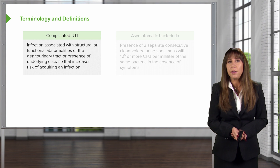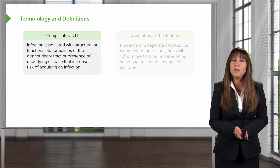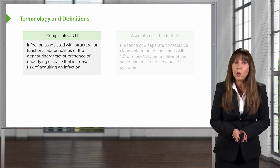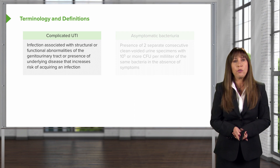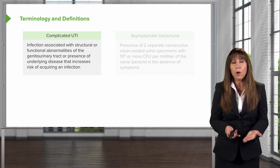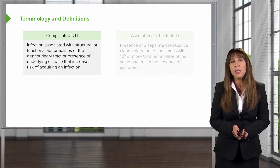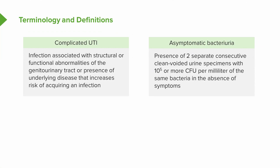A complicated UTI, on the other hand, is when infection is associated with a structural or functional abnormality in the genitourinary tract, or the presence of an underlying disease that increases risk of acquiring an infection. You'll also hear the term asymptomatic bacteriuria — that means the presence of two separate consecutive clean-voided urine specimens with 10 to the fifth or more colony-forming units per milliliter of the same bacteria, in the absence of symptoms.